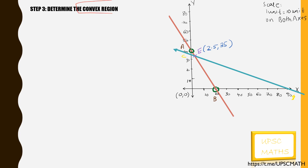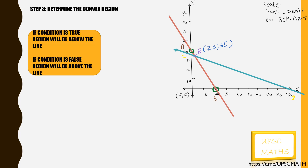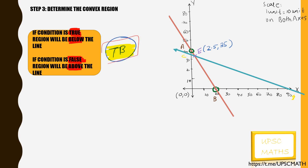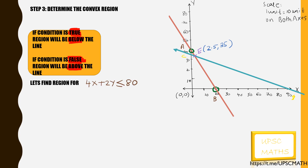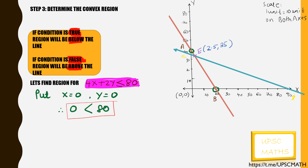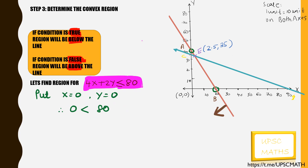Now we have to determine the convex region or the solution space. To find the solution space, remember this statement: if the condition is true, the region will be below the line; if the condition is false, the region will be above the line. You can use the cheat code TB. For the first constraint, put x equal to 0 and y equal to 0 — you get 0 less than 80, which is true. So the region will be below the line 4x plus 2y equal to 80.